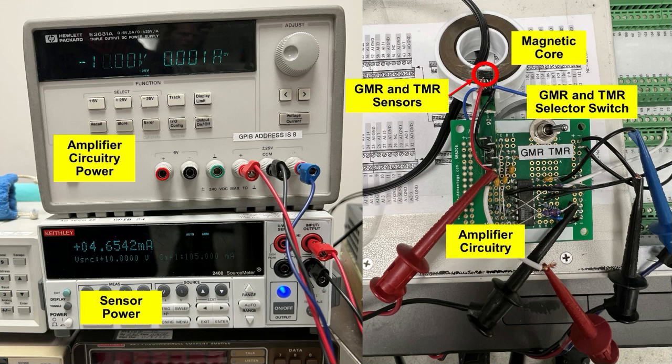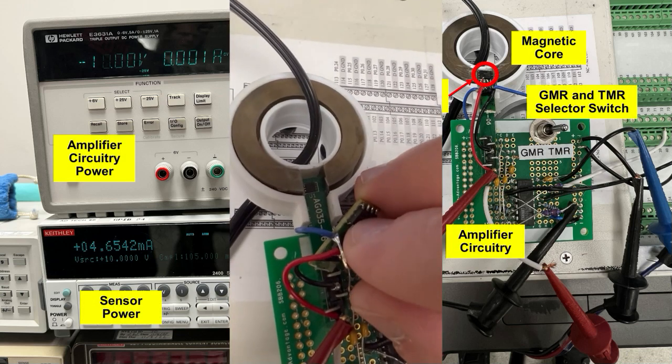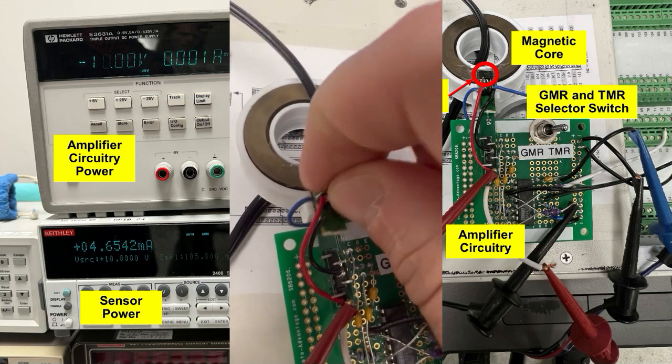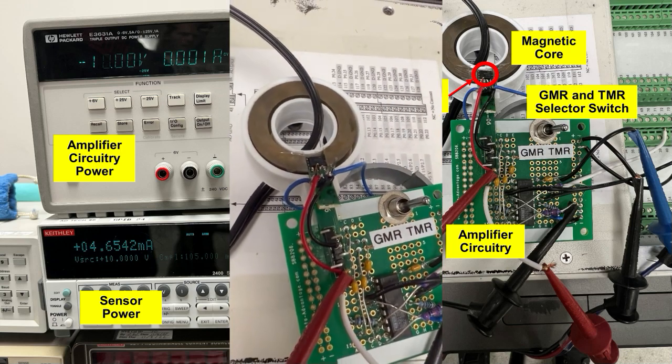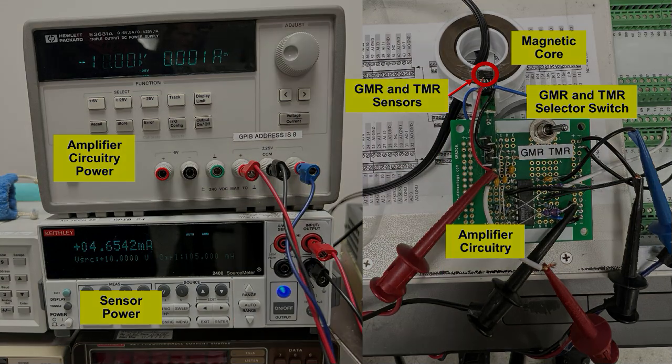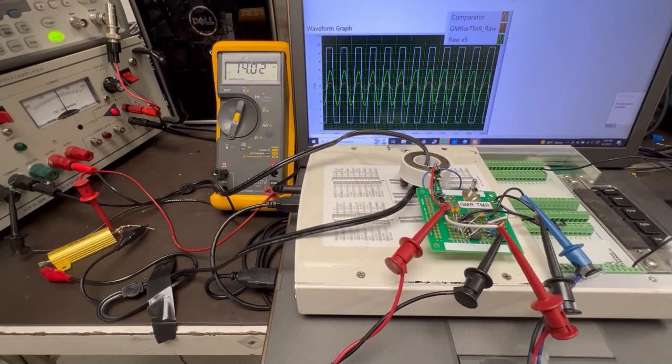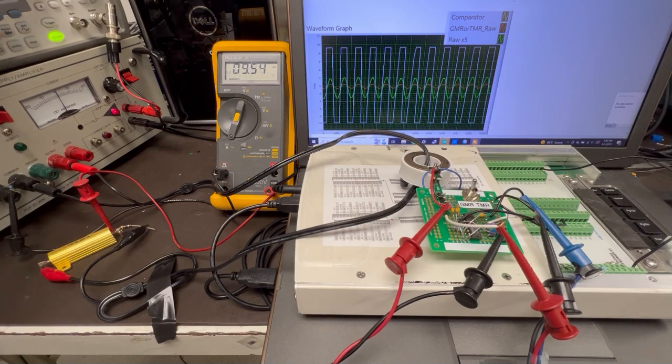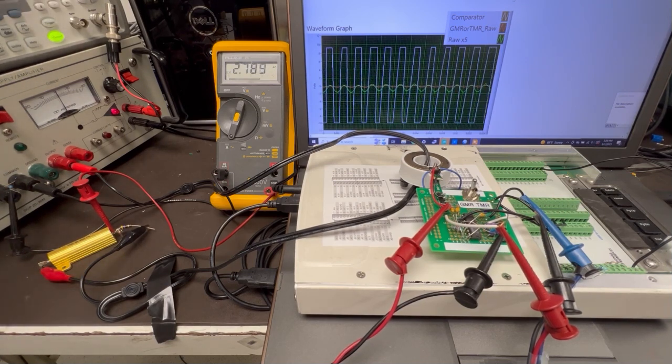We have NVE's AAH002 and ALT021 sensors both stacked on the inside of the magnetic core with a selector switch to control which output is displayed. We'll start with the AAH002 GMR magnetic sensor. As you can see, we can detect as low as 1.4 milliamps easily.